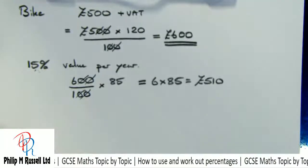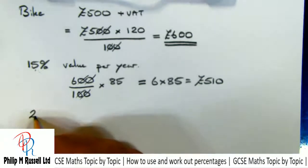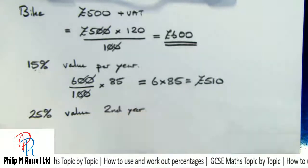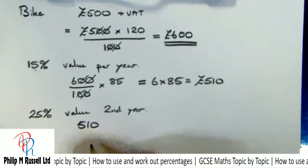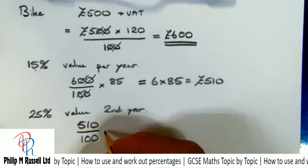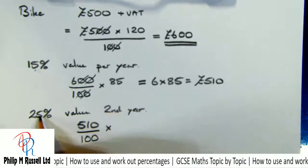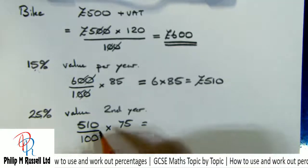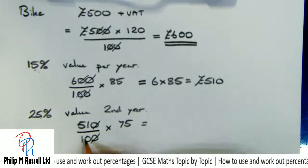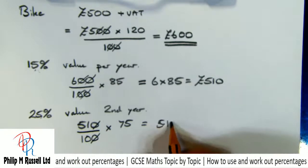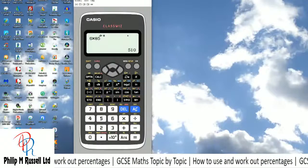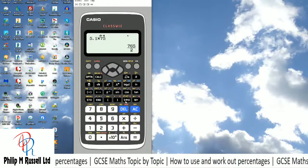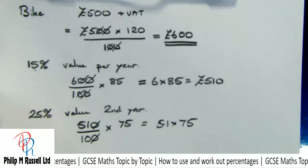In the second year the bike loses 25% of its value. We repeat this process but now take 510 × 75 ÷ 100, because it'll be worth only 75% of its value. Cancelling gives 5.1 × 75, and the calculator gives £382.50.